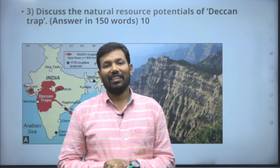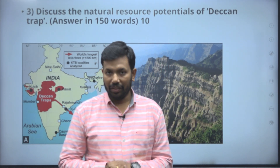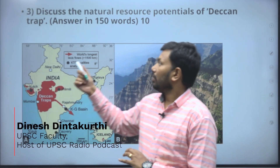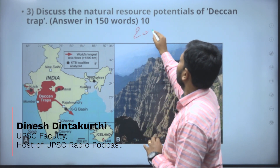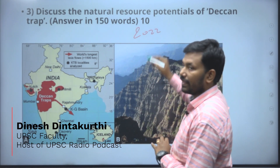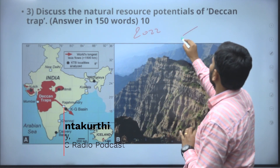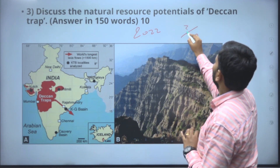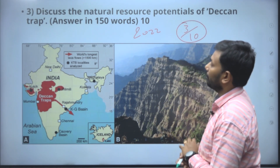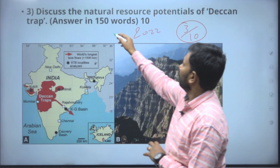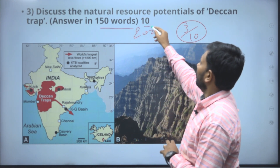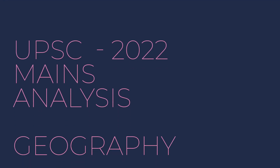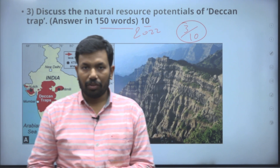Welcome to our channel, my name is Dinesh. In 2022 UPSC Mains, we have 10 questions of geography, and the third question is discussed here. This is a 150-word, 10-mark question: discuss the natural resource potentials of Deccan Trap. This is an Indian geography question.